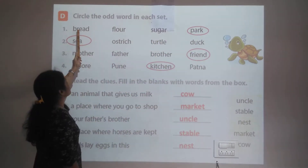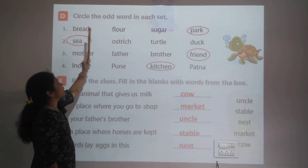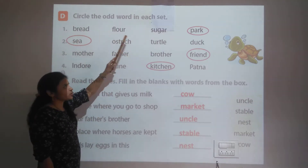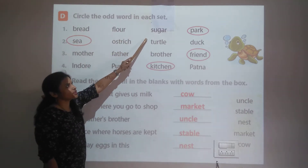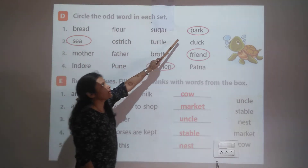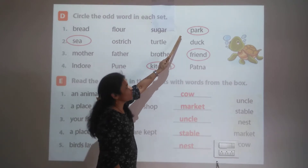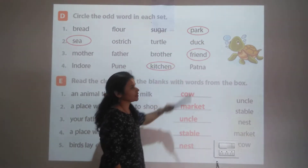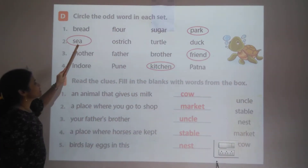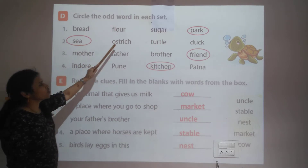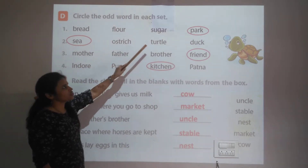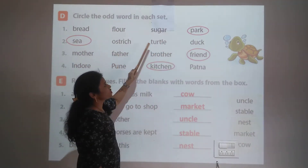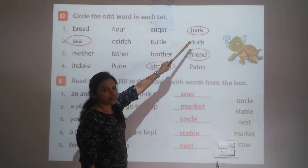In the first question: bread, flour, sugar — these three things are food. Pound is the different word, so we circle it. Second set: ostrich, turtle, duck. Ostrich, turtle, duck — one of these is different.